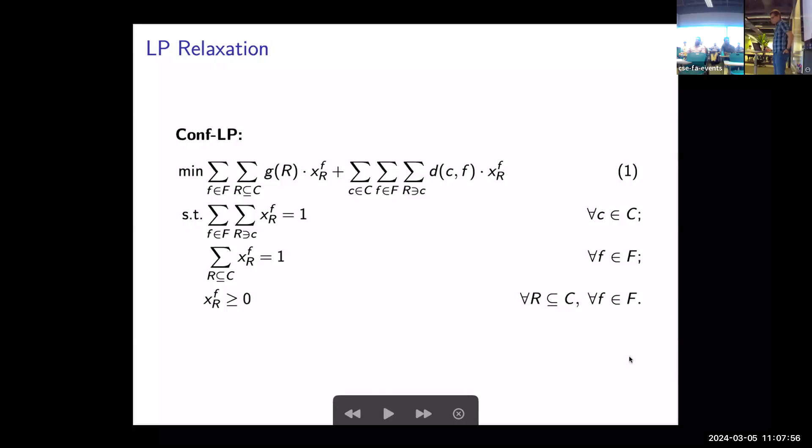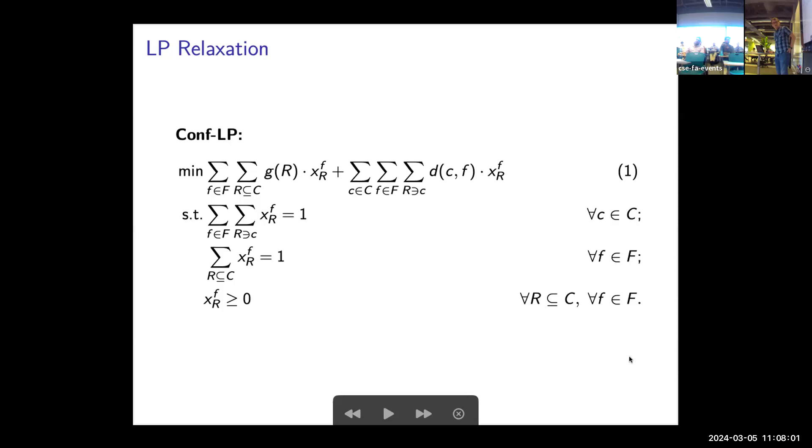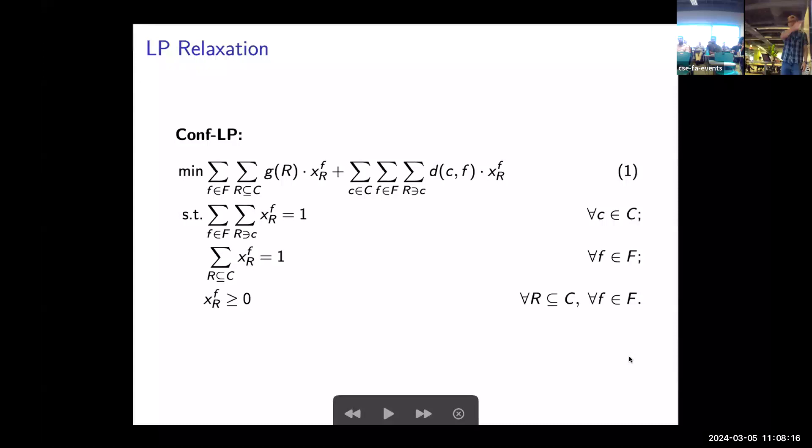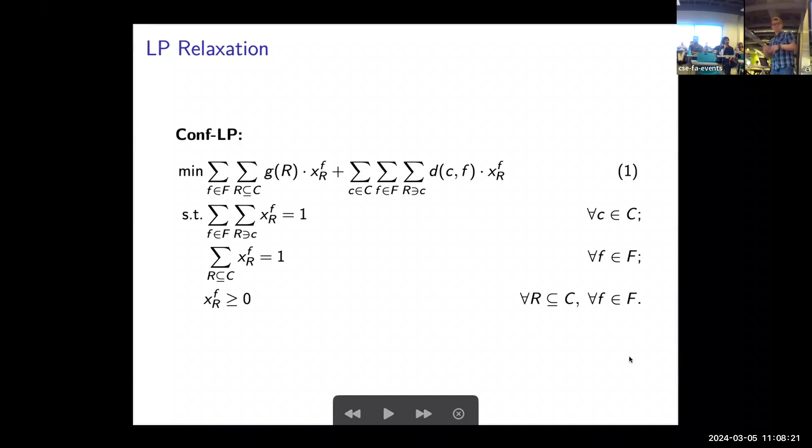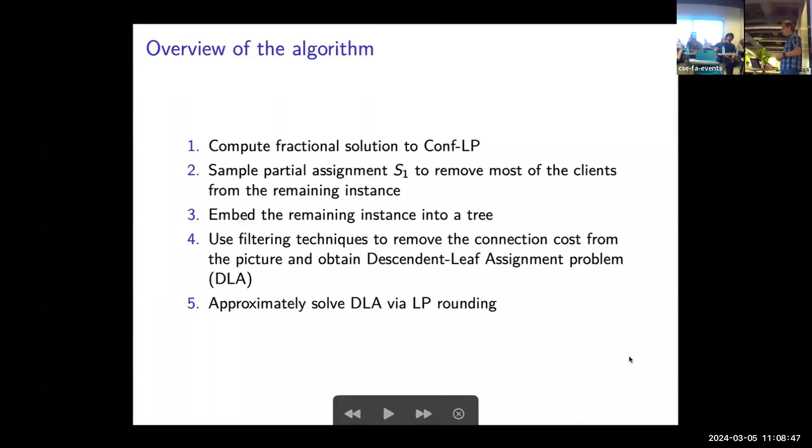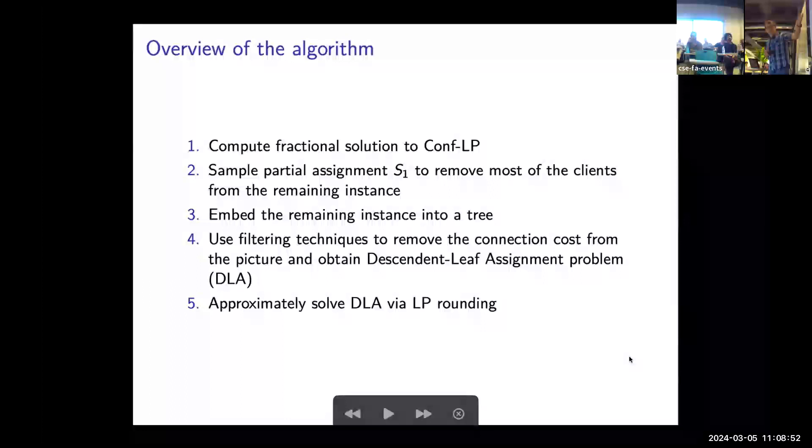We will be studying a natural LP relaxation of the problem, which is a configuration LP. Here we consider variables for sets of clients and individual locations. We just pay for the facility cost and this is the way to write the transportation cost. We can use fractional solutions to this configuration LP.